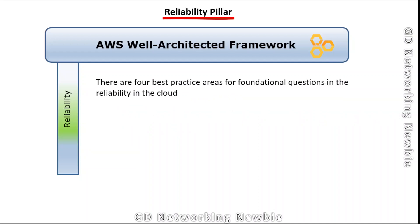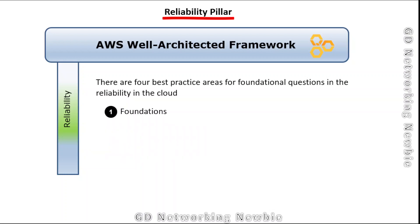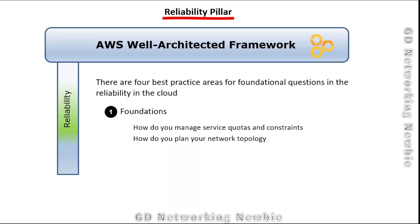There are four best practice areas covering foundational questions for reliability in the cloud: foundation, workload architecture, change management, and failure management. In the foundation area, foundational questions include: how do you manage service quotas and constraints, and how do you plan your network topology? I will put a link to the reference document in the description so you can explore further details on how each question is addressed.